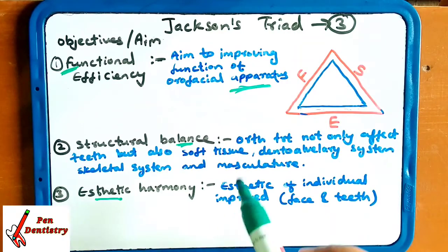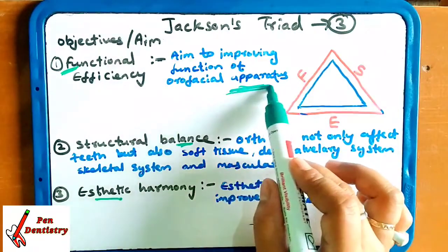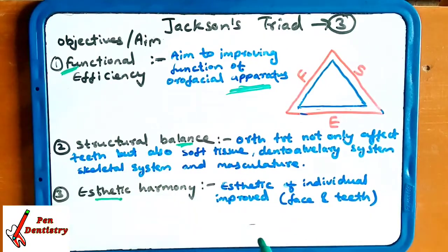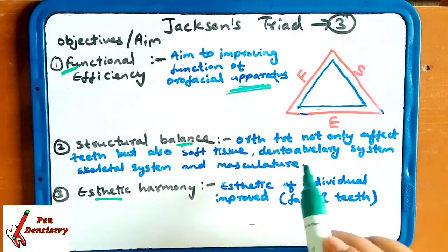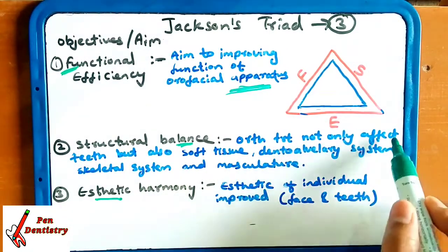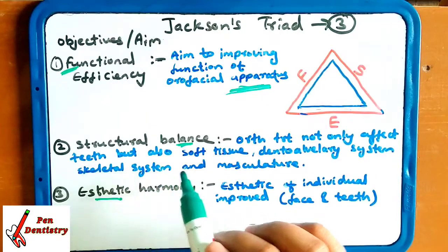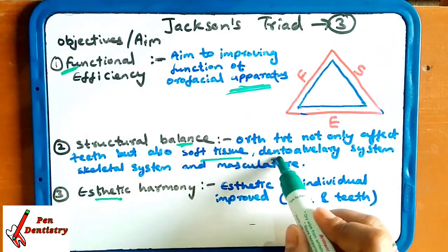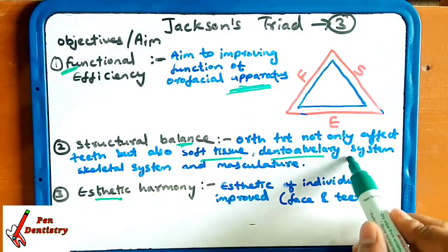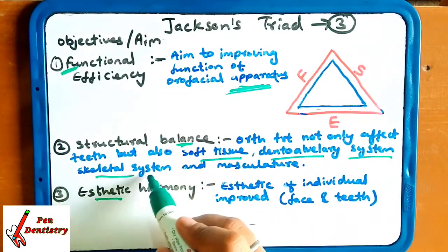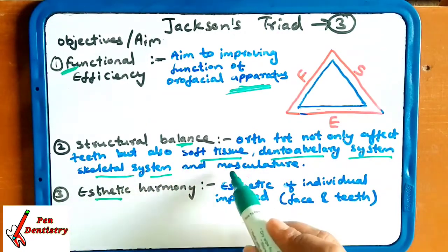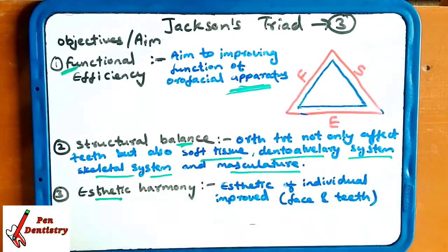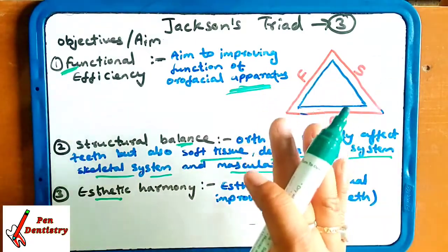Structural balance — orthodontic treatment not only affects the teeth but also the soft tissue, dentoalveolar system, skeletal system, and musculature. So there should be maintenance of all these things at the same time.